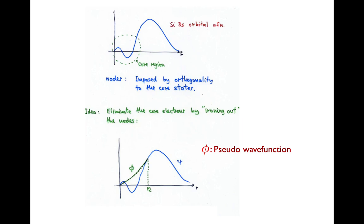If core electrons are inert and we want to get rid of them, and if the nodes are a signature of the core electrons, why don't we get rid of the nodes? Why don't we iron out the wave function and get rid of the nodes such as here. The idea is to get this pseudo wave function